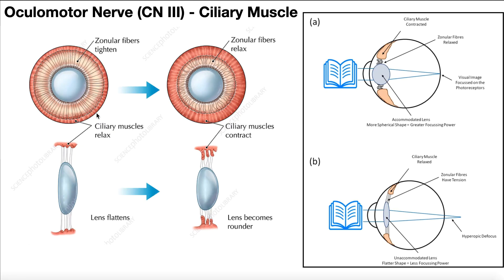Here's another view of the same thing, looking at it front-on. This is where the ciliary muscles are relaxed and the lens is flatter. But as soon as we get parasympathetic function of the oculomotor nerve when looking at something up close, the ciliary muscles contract, causing the lens to become rounder and bulge out, making it better at focusing close objects on the retina.